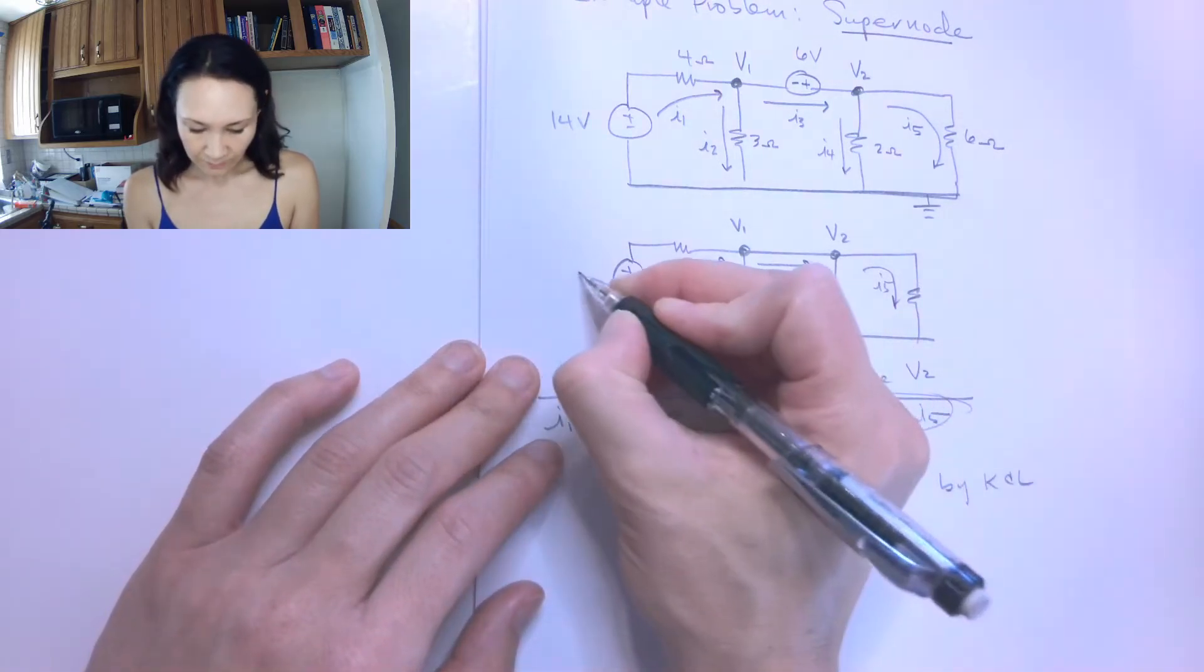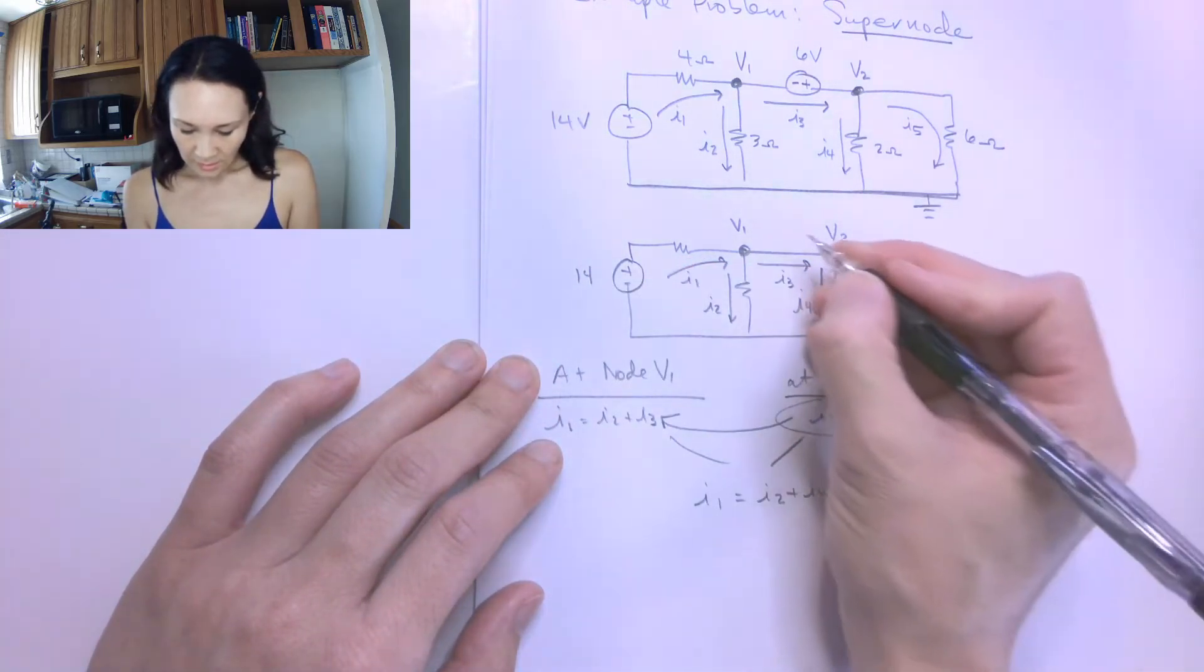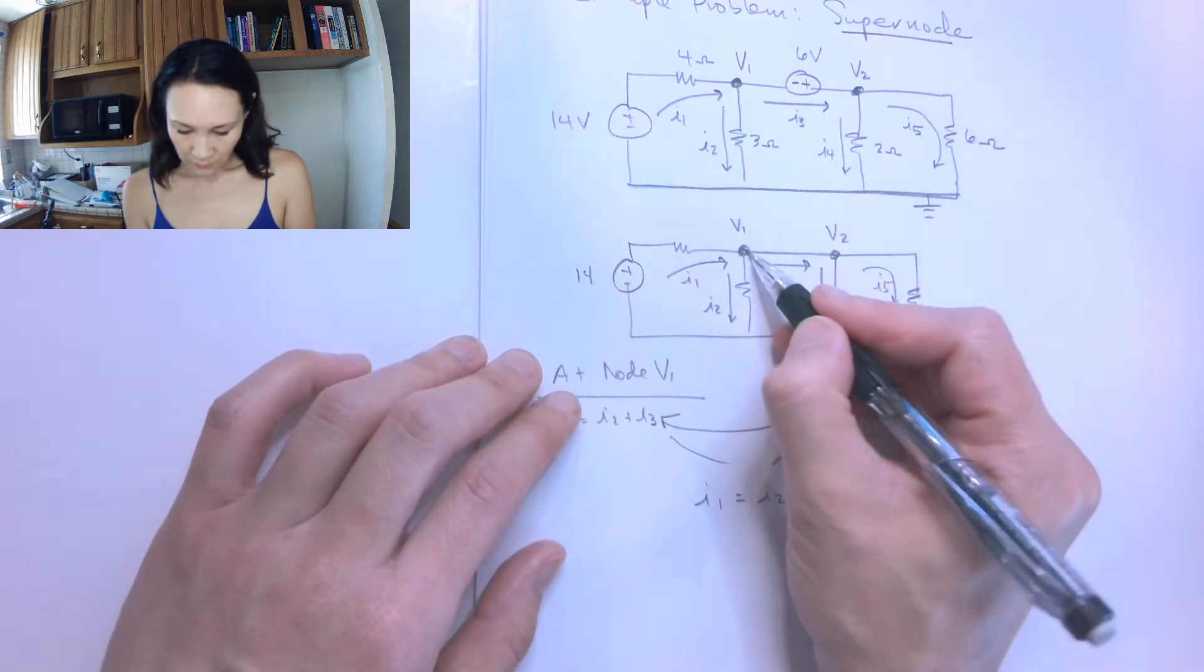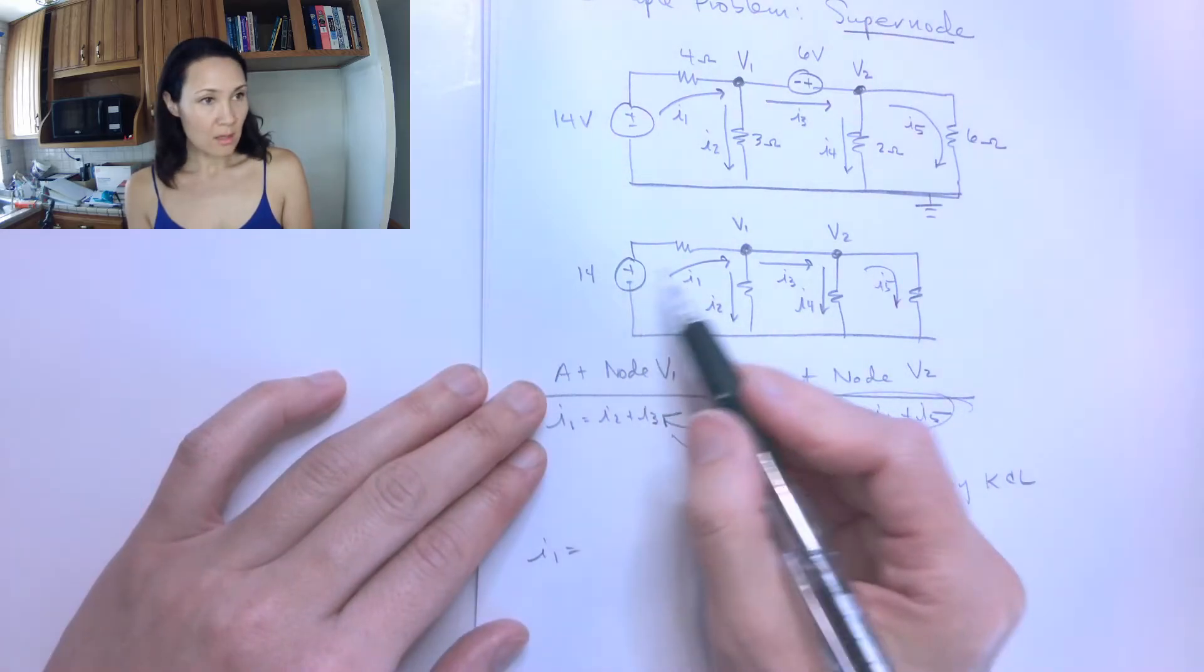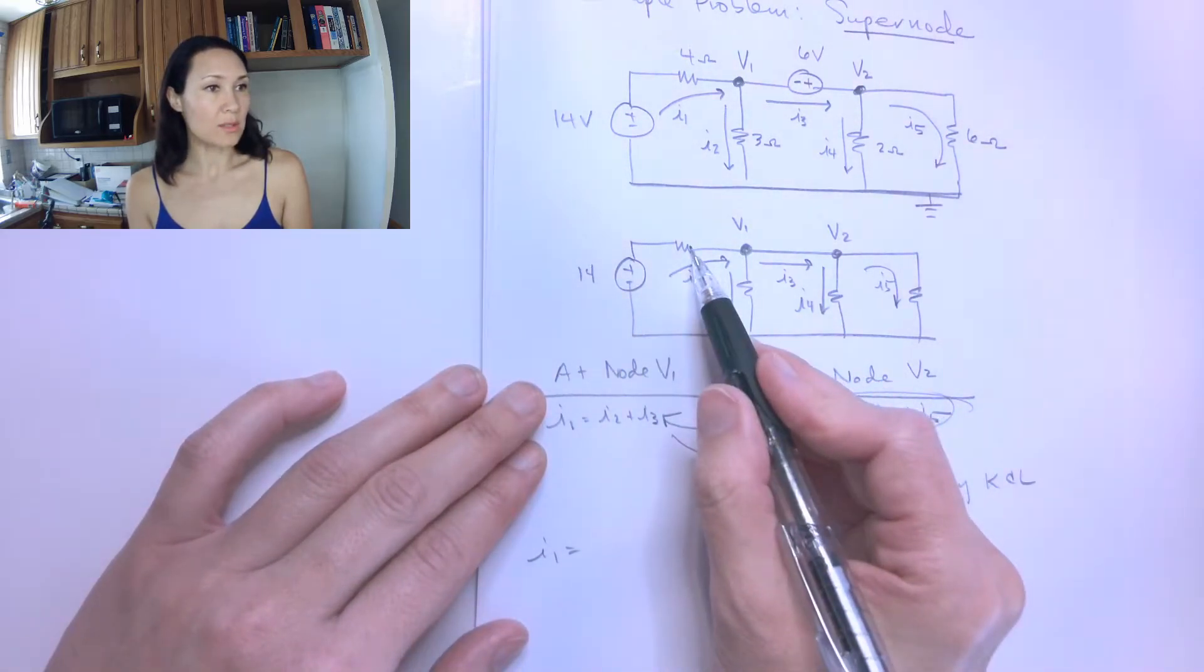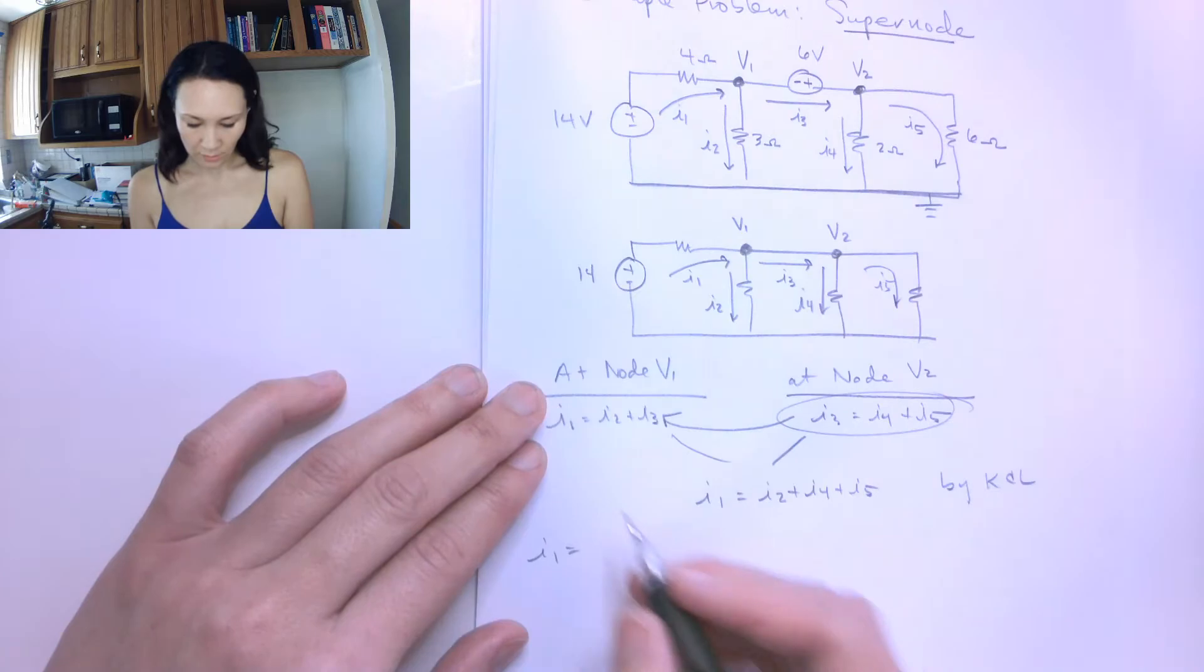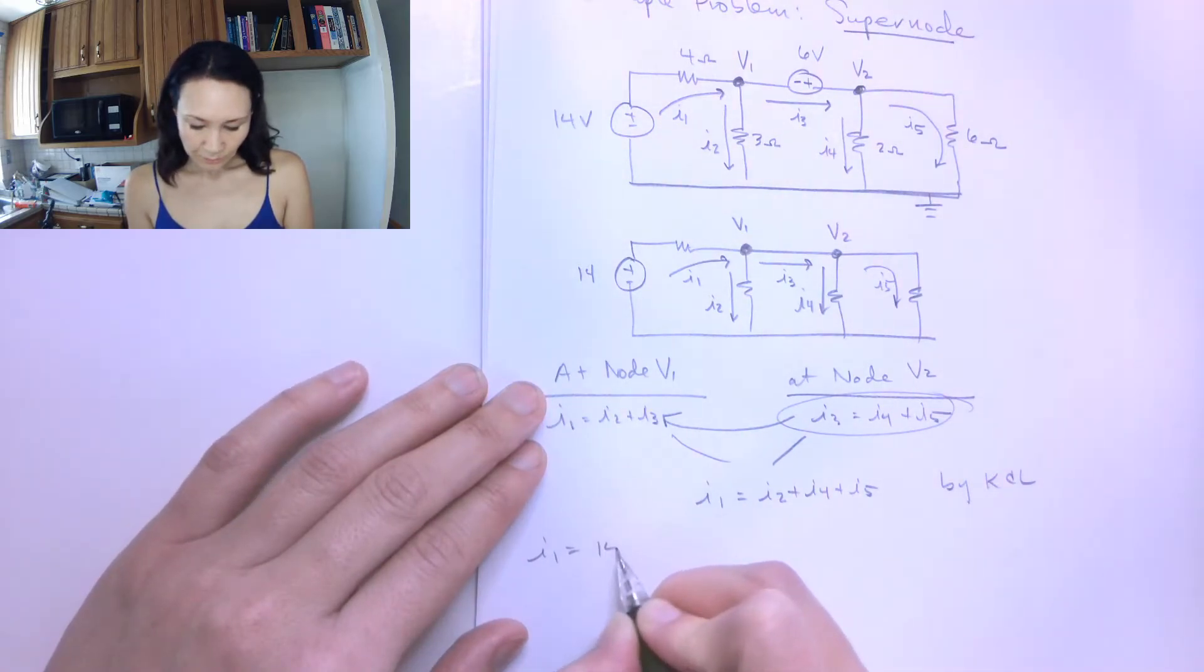So the way we do that is, this is 14 and this is V1. I'm going to replace I1 with 14 minus V1 divided by the resistor between, which is a 4 ohm resistor. So I1 will be 14 minus V1 over 4.